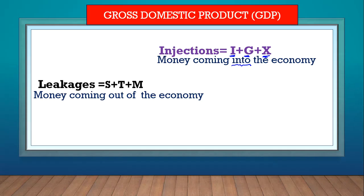Leakages are just the opposite of injections — all the money leaking out of the economy. We also have three leakages: savings, because if you save your money at the bank you're taking it out of the economy; taxation, because if the government taxes you, that money goes to the government and you can't use it; and imports, because when we buy goods from other countries and the money leaves to pay for those goods, it's leaking out. It's important to understand the three injections and three leakages when talking about GDP.